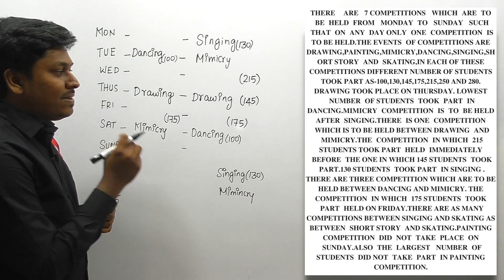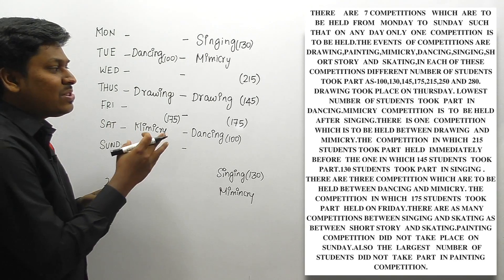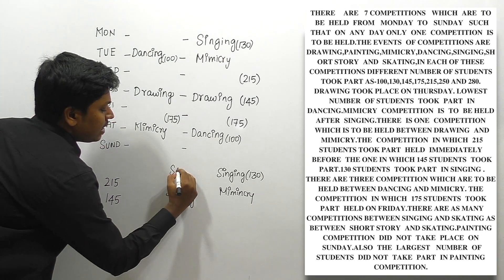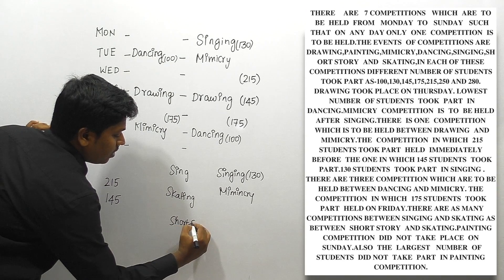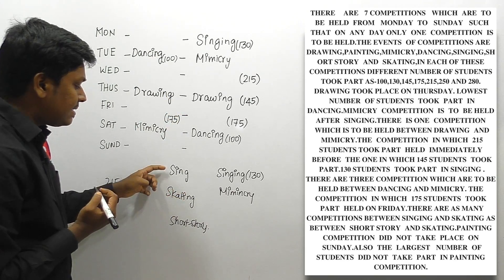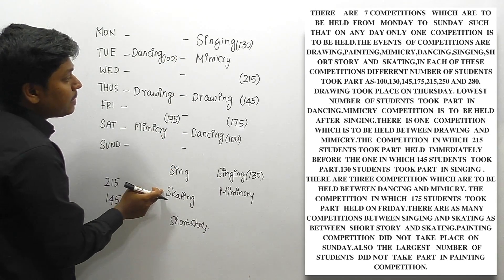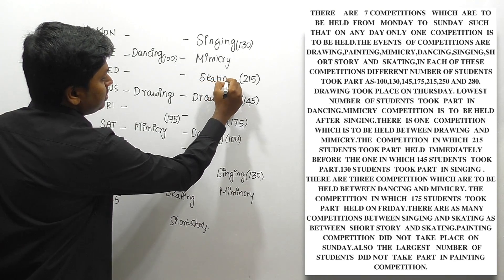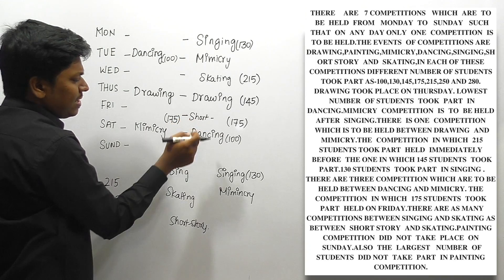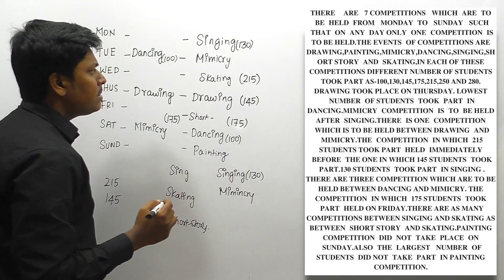Next clue: there are as many competitions between singing and skating as between short story and skating, meaning skating is equidistant between singing and short story. In condition one, singing is already placed, so skating must be placed equidistantly, and short story follows. The remaining competition — painting — fills the last slot. That completes condition one's arrangement.